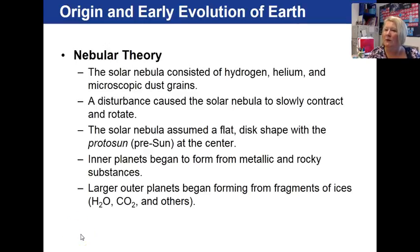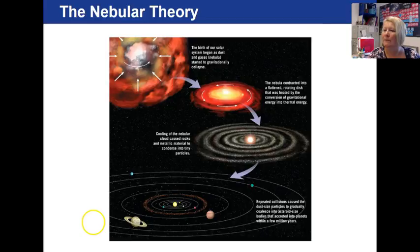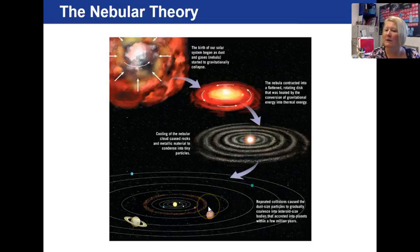The solar nebula consisted of hydrogen, helium, and dust, and with time the nebula began to contract and rotate and assume a flat disk shape with a protosun — the early beginnings of our sun. The inner planets formed from metallic and rocky substances, and the outer planets formed from fragments of ice, water, CO2, and others. Our inner planets are Mercury, Venus, Earth, and Mars, then we have the asteroid belt, and then our outer planets consist of Jupiter, Saturn, Uranus, and Neptune. Here's an image of the initial formation of our solar system — just a cloud of dust and gases — and you can see the progression into a more and more organized solar system with time.